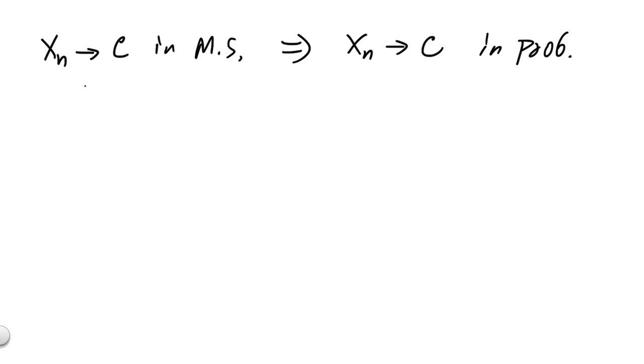Now that we know if xn converges to c in mean squared, it implies that xn converges to c in probability. One might wonder whether the reverse is true. Namely, if we know something converges in probability to a constant, does the same sequence of random variables converge to the same constant in mean squared? Well, it turns out that is not quite the case. The notion of convergence in probability is not as strong as the notion of convergence in mean squared.